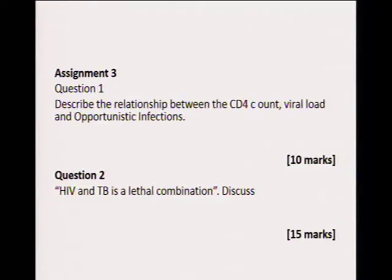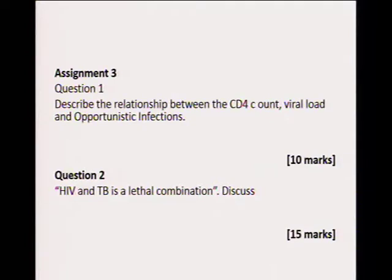Assignment three also has two parts. Discuss the relationship between the CD4 count, the viral load, and opportunistic infections. There is a relationship between your CD4 count, your viral load, and opportunistic infections, and we want you to describe what that relationship is. Question two: HIV and TB is a lethal combination — discuss. It has been said that all of us have a TB bacterium inside us, but in most cases we may not suffer from TB. But the minute HIV enters, this bacterium becomes very active. We want you to look at that in more detail.